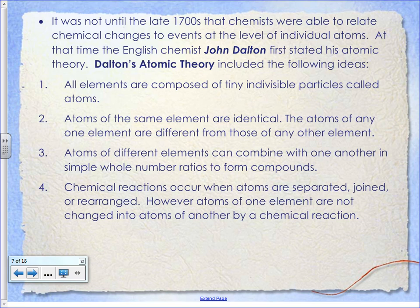I would write down the four points of Dalton's atomic theory — they are important. Through all of his experiments, Dalton came up with these four ideas. First: all elements are composed of tiny, indivisible particles called atoms. Not invisible — indivisible. The word atom actually means 'uncuttable.' It means you can't make it any smaller, you can't break it down into smaller parts. We know that's not true, but at the time it made sense.